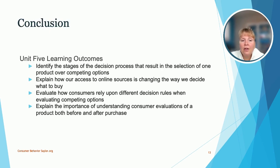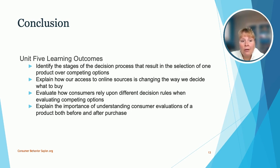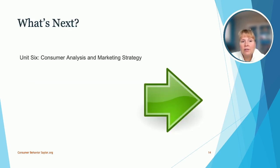In conclusion, here are the Unit 5 learning outcomes. We looked at the stages of the decision process and the buying decision process. We explained how access to online sources changes what we decide to buy. We looked at the different decision rules when evaluating competing options. And we talked about consumer evaluations of a product both before and after a purchase. Unit 6 is on consumer analysis and marketing strategy. My name is Dr. Marci Stone — thanks for listening.